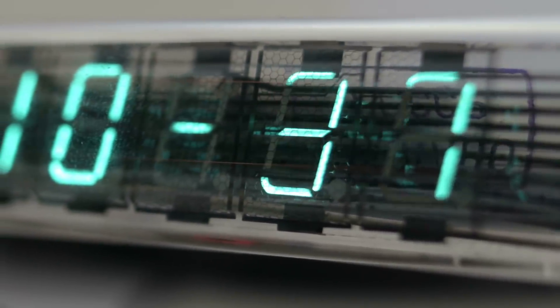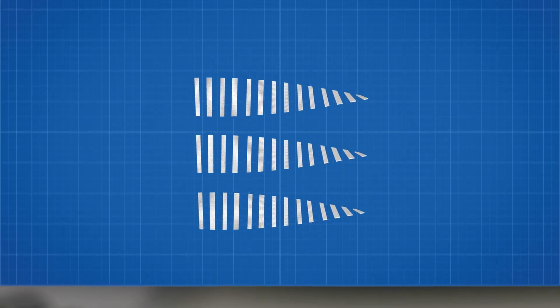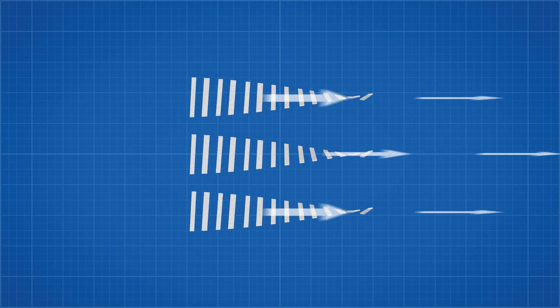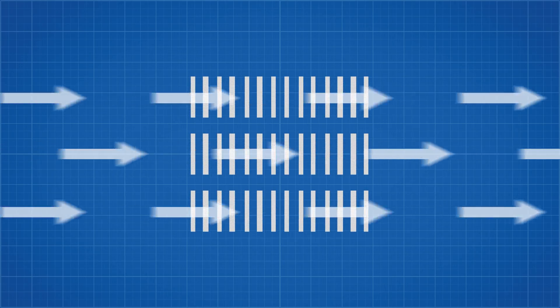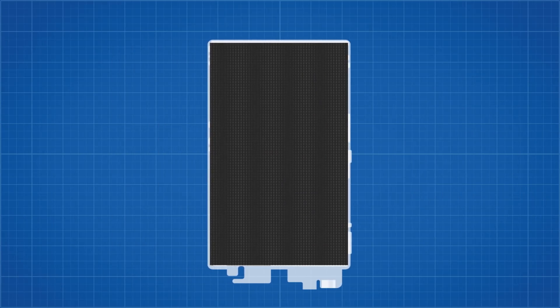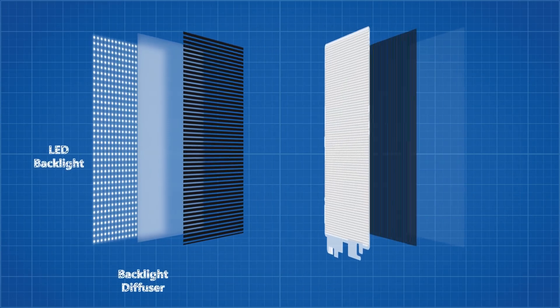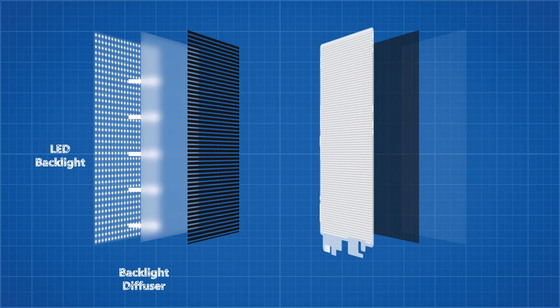LCD stands for Liquid Crystal Display. The liquid crystals used fall somewhere between a liquid and a solid, which allows them to change their molecular orientation when an electrical current is applied. This is incredibly useful as it allows us to use the molecules to manipulate light passing through the liquid crystal. Liquid crystal pixels do not produce their own light, but in modern LCD panels, LED backlighting is used with a backlight uniformity filter added to ensure even lighting across the panel.